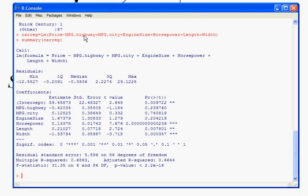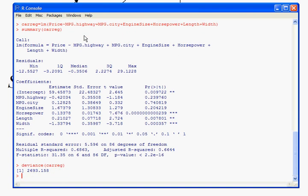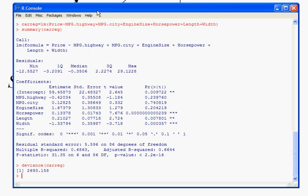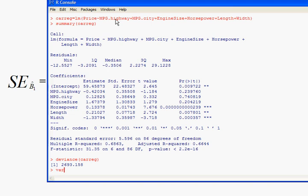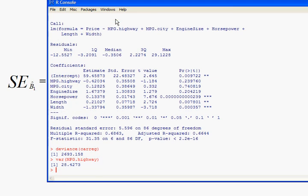First, the sum of squared residuals, you can actually get very easily in R by typing deviance. The deviance of that regression, carreg, gives us what we want, which is 2693.158. That is the sum of squared residuals. We're going to need the square root of that to put into our standard error formula here. We also need the variance of MPG dot highway. And that variance is 28.4273. But notice, we don't really want the variance.